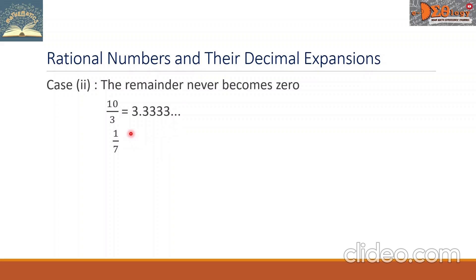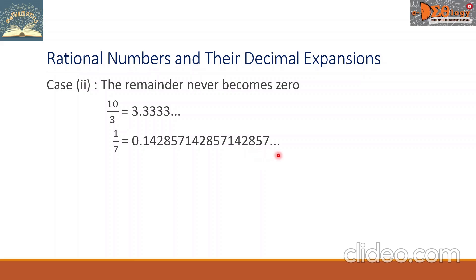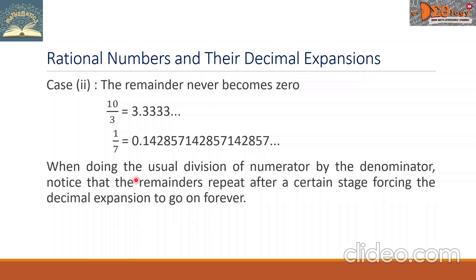Another example: 1 over 7. That is equal to 0.142857142857142857 and so on. When doing the usual division of numerator by the denominator, notice that the remainders repeat after a certain stage, forcing the decimal expansion to go on forever.